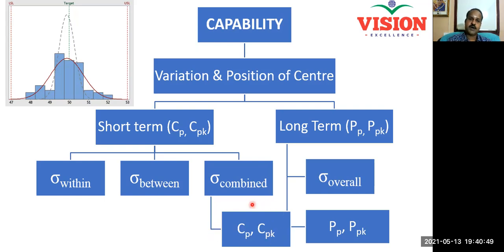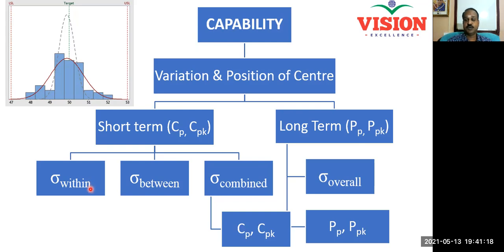It is always a good idea to calculate capability indices only after bringing the process into a state of statistical control. If you bring the process into statistical control, the between-batch variation will be negligible — very small or even negligible. At that point, the combined-standard deviation will be more or less equal to the within-batch standard deviation. So you can conduct your study over a short-term, use the combined-standard deviation, and that will give you realistic values of Cp and Cpk.